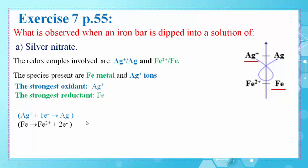The half reactions that take place are: Ag+ is reduced to Ag by gaining one electron, and Fe is oxidized to Fe2+ by losing two electrons. To write the overall reaction, we have only one electron in the first reaction and two electrons in the second reaction. We must multiply the first reaction by two and the second reaction by one. Adding these two reactions, we get the overall reaction: 2Ag+ + Fe → Fe2+ + 2Ag.